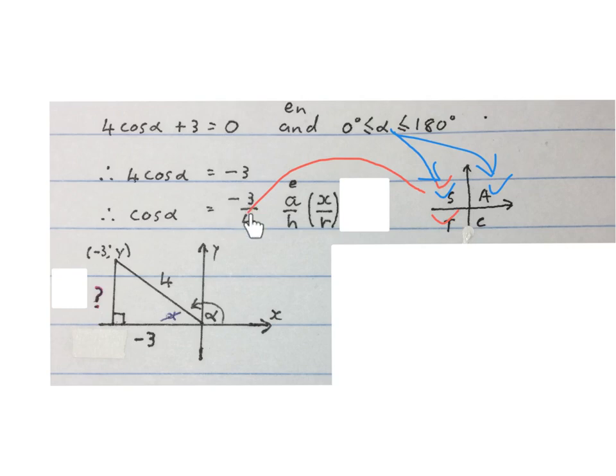I fill in this information on my sketch. It says here minus 3 over 4, which is x over r. So the x value is minus 3 and the radius is 4. I always write the minus 3 down there too. So we have the hypotenuse and we have the adjacent. We have to work out the opposite, the y value.